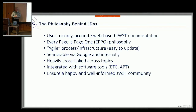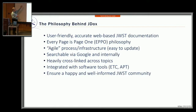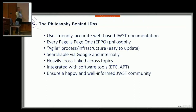JDocs is searchable. You can search from within JDocs or use Google or another search engine. But you may end up somewhere in the middle of the content, and we want to show you how to understand where you've landed. Part of the every-page-is-page-one philosophy is this heavily linked strategy — kind of a Wikipedia model. If you find a link that's not working, you can ping us on the Help Desk and we'll get it fixed as soon as possible.